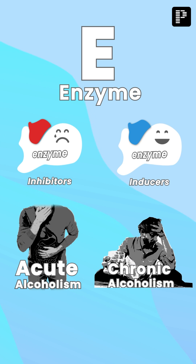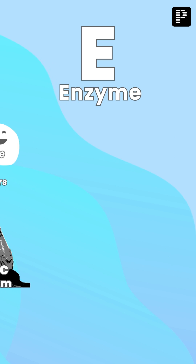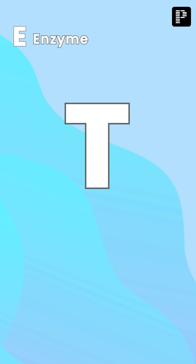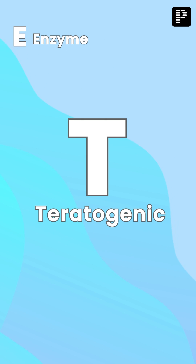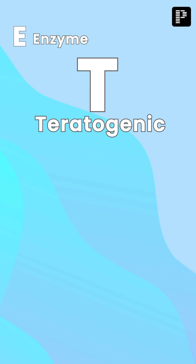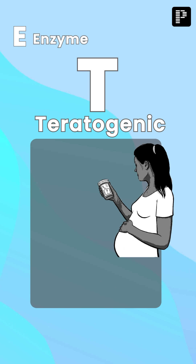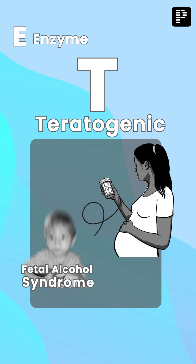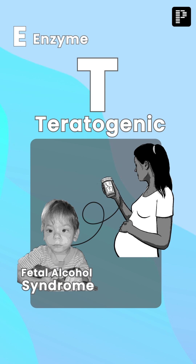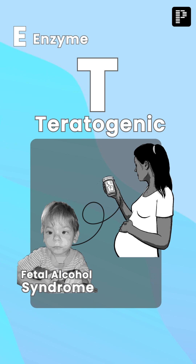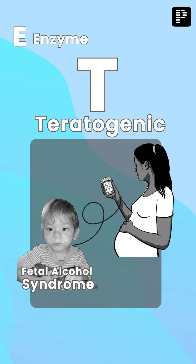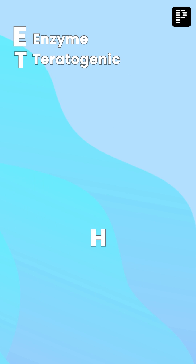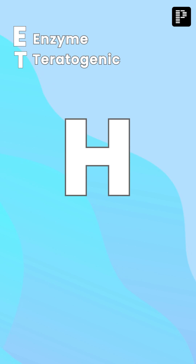The next letter is T — T stands for teratogenic. Ethanol is a teratogenic drug, and if consumed by pregnant women, there is a risk of fetal alcohol syndrome.